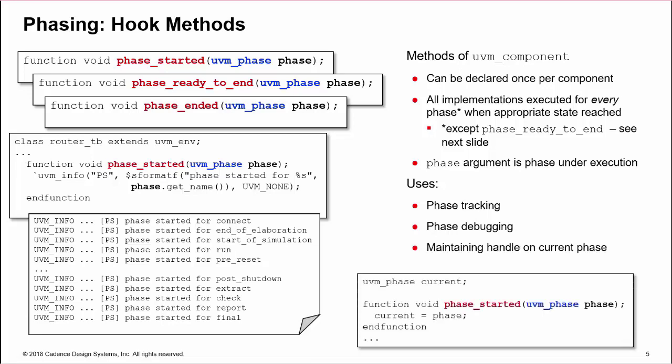The second example here assigns the phase argument of the hook method to a property at the start of every phase. This attempts to keep a handle on the current phase, although, as discussed, during runtime, there may be no single current phase. We may have run_phase, run sub-phases, domain sub-phases, and user-defined phases, so the property will switch between these as each phase starts.